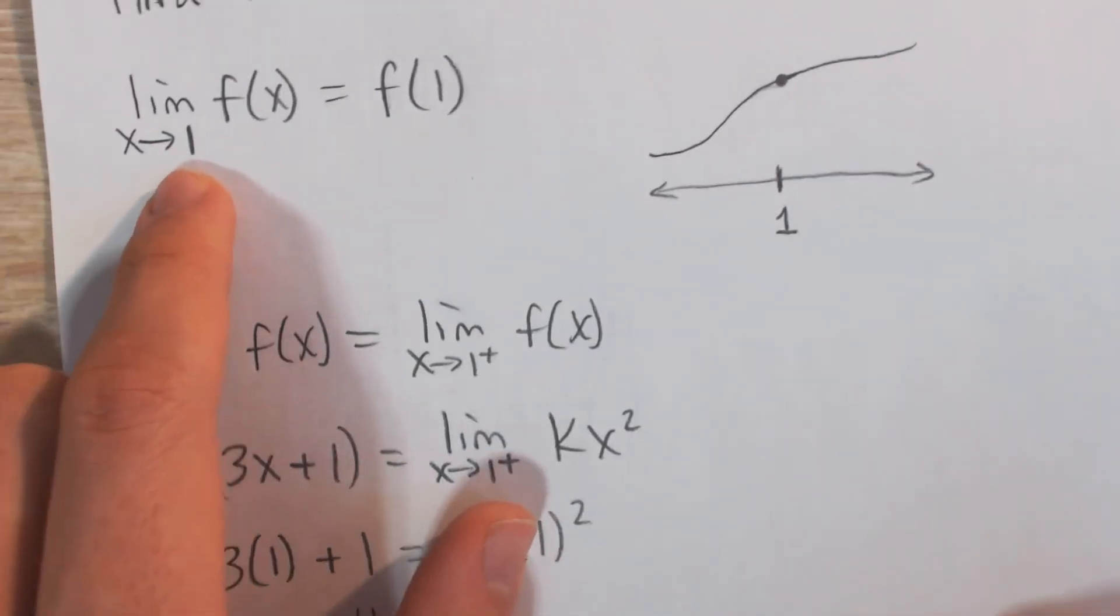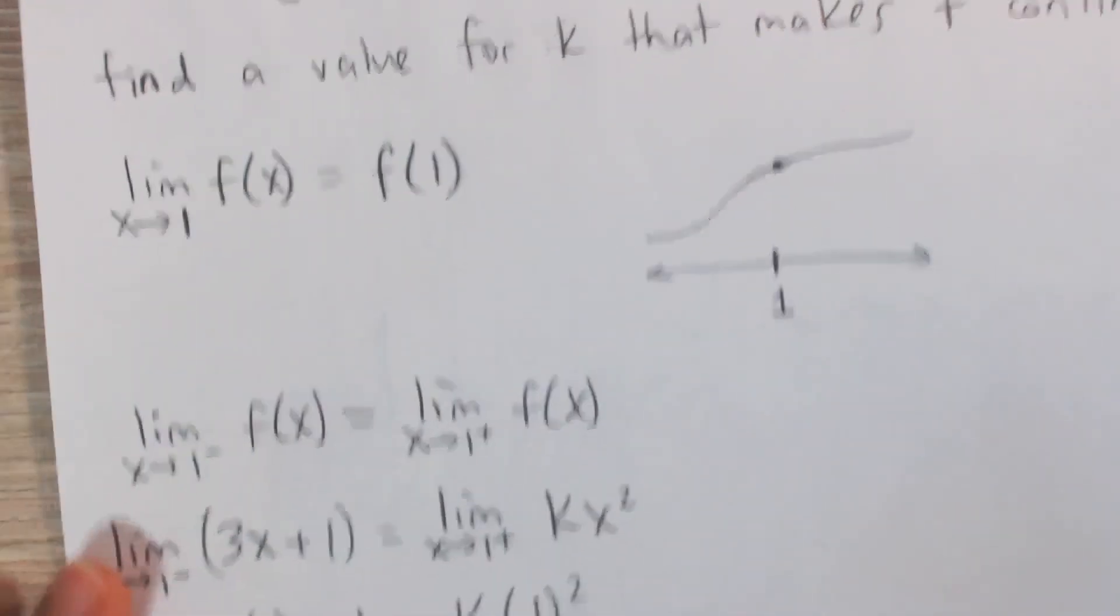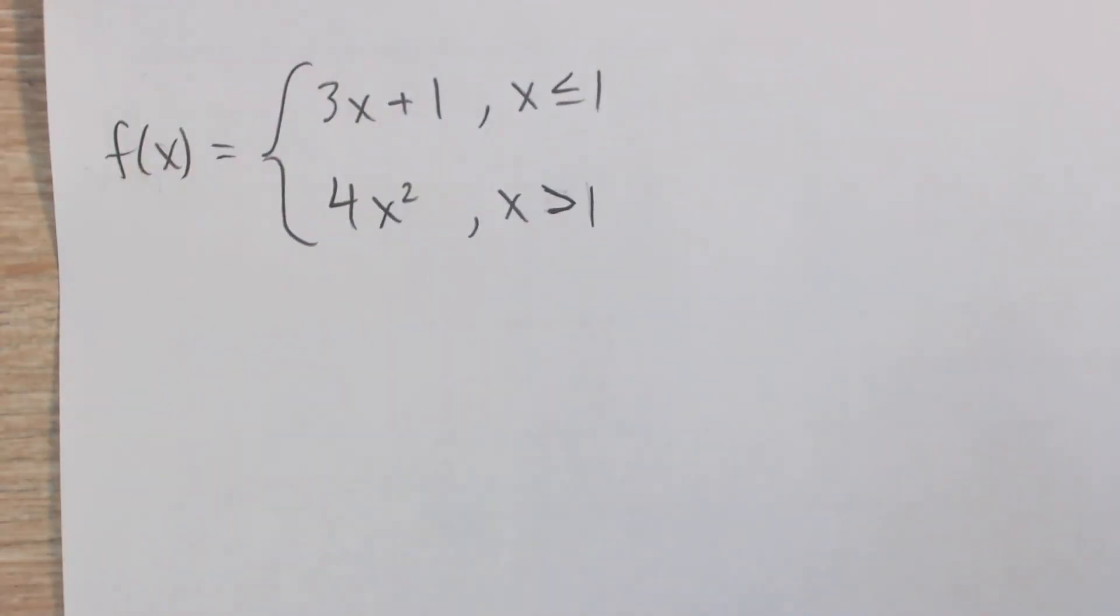So in other words, the limit as x approaches 1 is 4, and f of 1 is 4, and so this function is continuous, or I should say this function down here is continuous at, well, for all real numbers, but especially at 1.